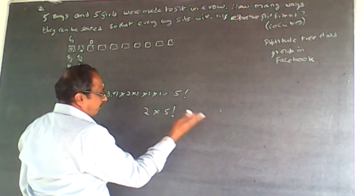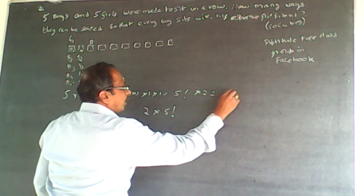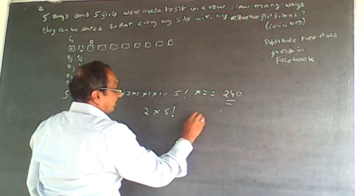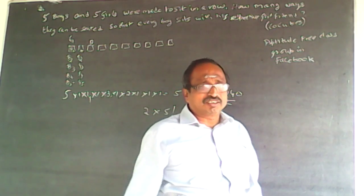So the answer is two into five factorial. Two into five factorial or five factorial into two. The answer is 240. The answer is 240. There are 240 combinations. Understand the question. Some have confused permutation and combinations.